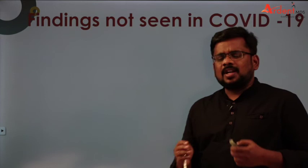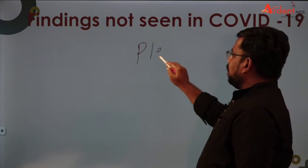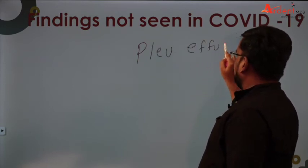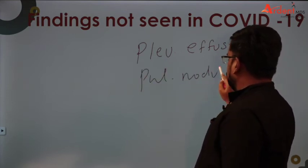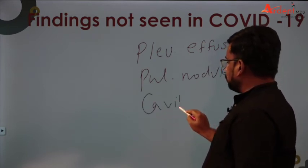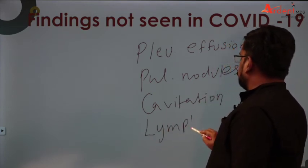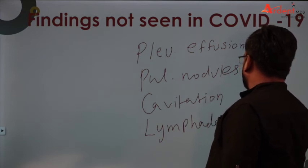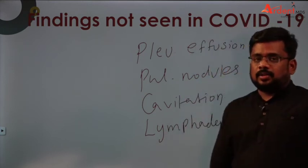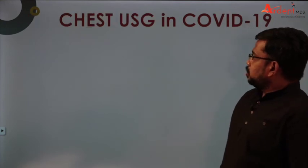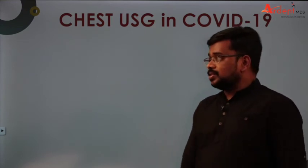What are the findings NOT seen in COVID-19 patients? In COVID-19, you cannot see pleural effusion, pulmonary nodules, cavitation, or lymphadenopathy. These are the findings which are not seen in COVID-19 patients — they may ask you this as an MCQ. Ultrasound can also be used as an adjuvant for COVID-19 patients in emergency conditions.